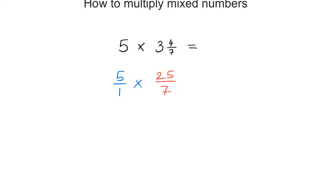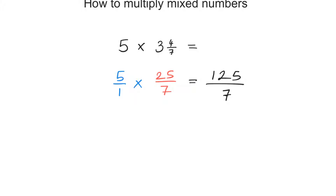Now that we are at this stage, all we need to do is just multiply fractions — top times the top, bottom times the bottom. 5 times 25: we can do this in our head, 5 times 25 is just 125. And 1 times 7 is just 7. Can I simplify this? Do these numbers have any factors in common? No, I cannot simplify this, so this is my final answer in its simplest form.